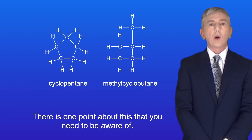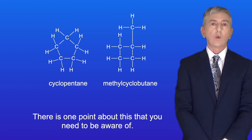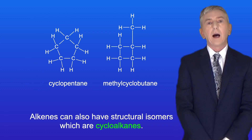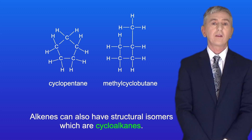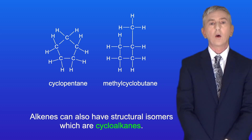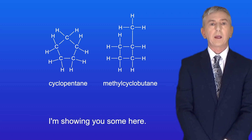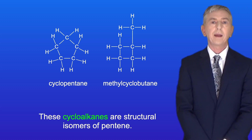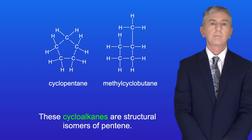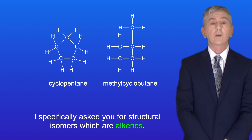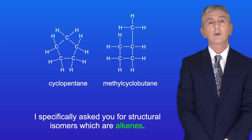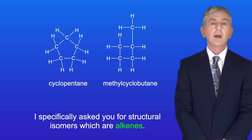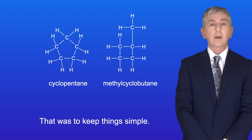One point to be aware of: alkenes can also have structural isomers which are cycloalkanes. These cycloalkanes are also structural isomers of pentene. I specifically asked for alkene isomers only to keep things simple.